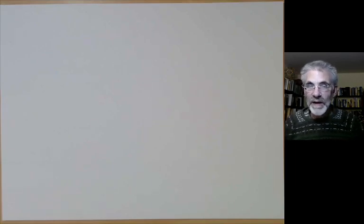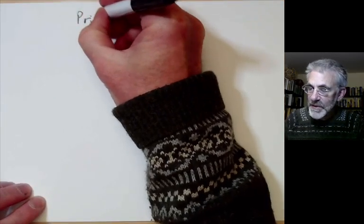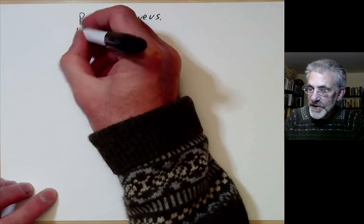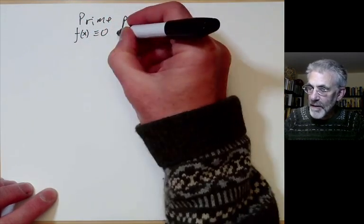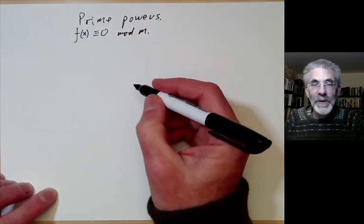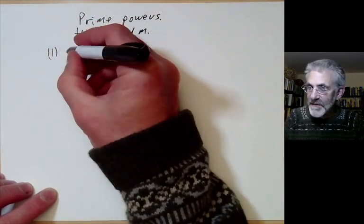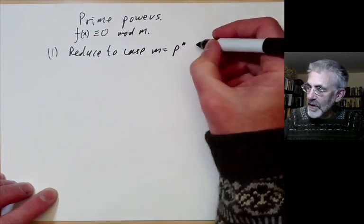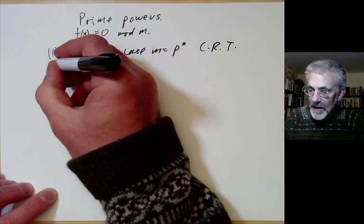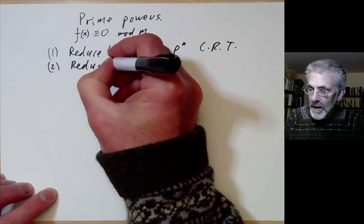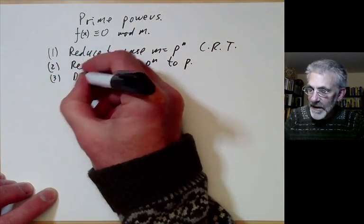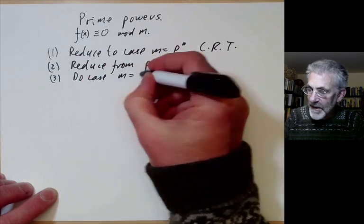This lecture is part of Berkeley Math 115, an introductory undergraduate course on number theory, and will be mostly about solving equations modulo prime powers. The problem is to solve f(x) ≡ 0 mod m. We do this in several steps: first, reduce to the case where m is a prime power using the Chinese Remainder Theorem; next, reduce from prime powers to primes; and third, handle the case where m is prime.